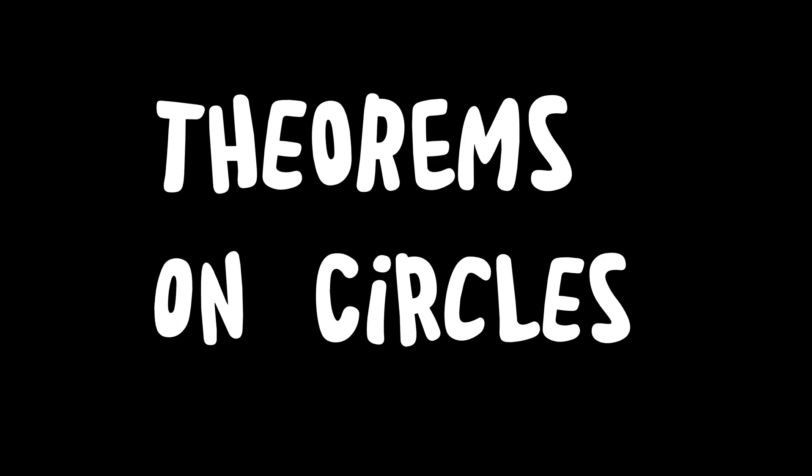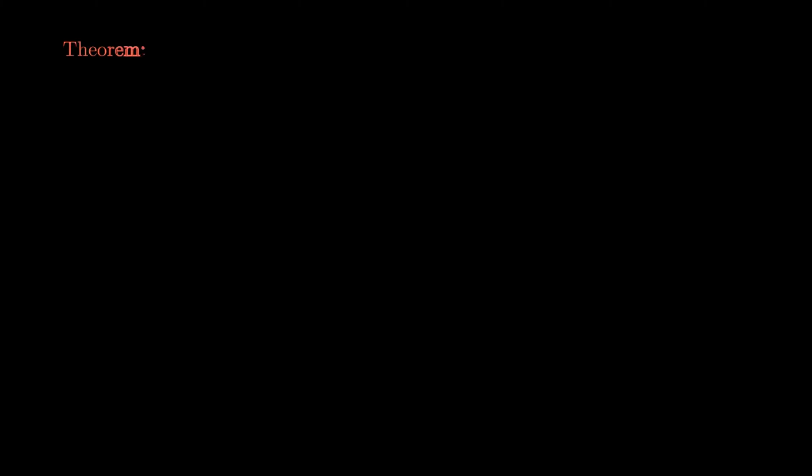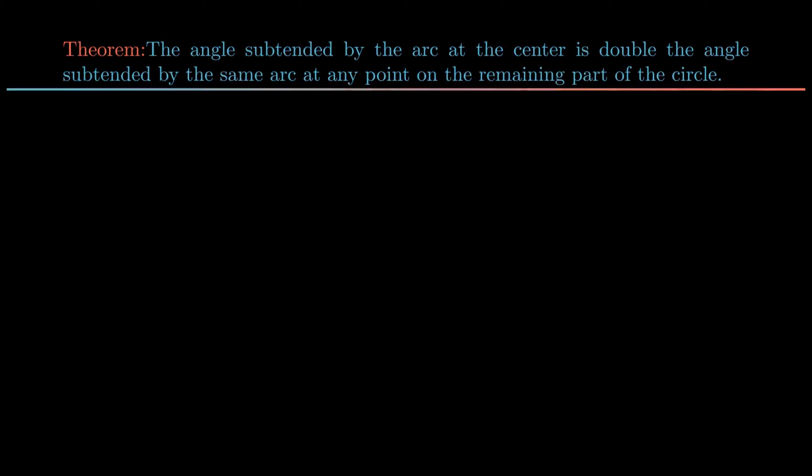In this video we will understand the theorem related to the angle subtended by the arc in a circle. The theorem states that the angle subtended by the arc at the center is double the angle subtended by the same arc at any point on the remaining part of the circle.